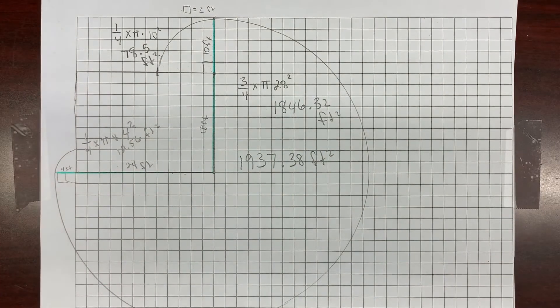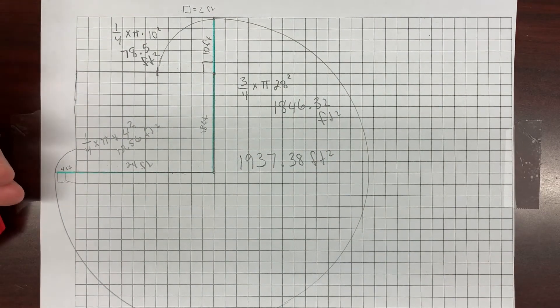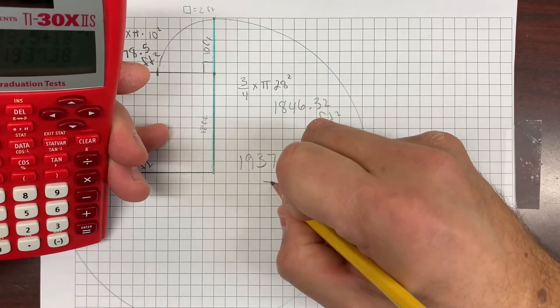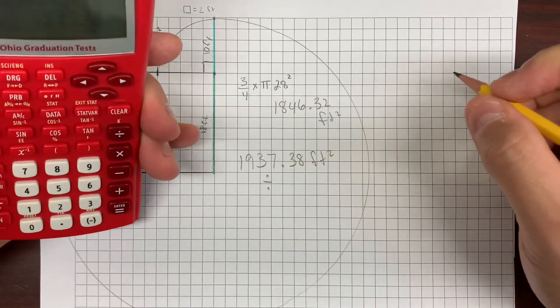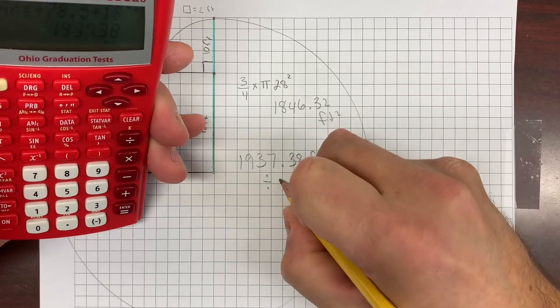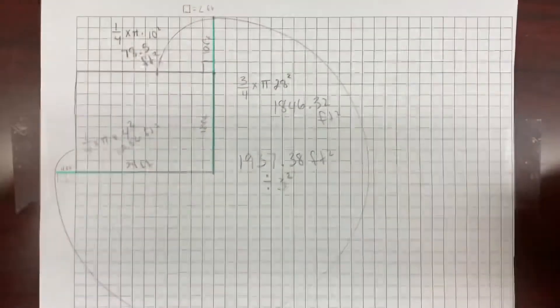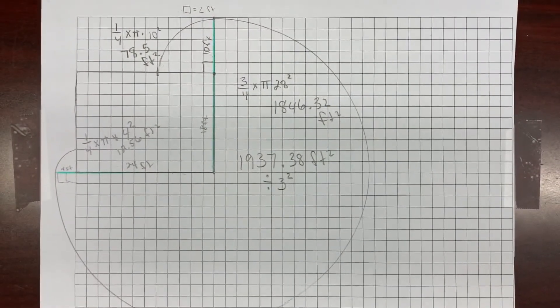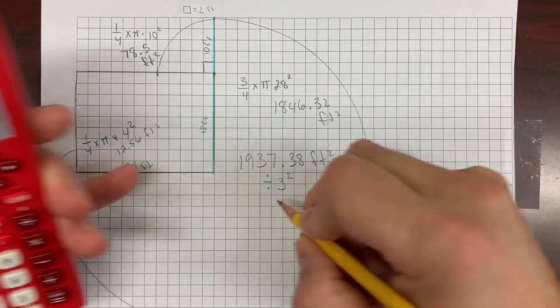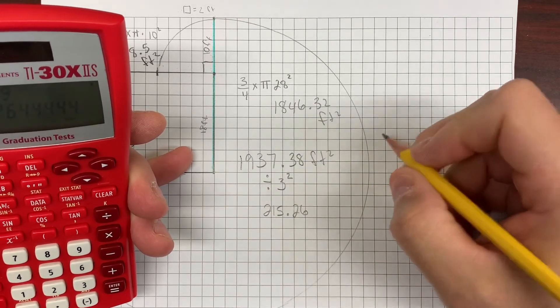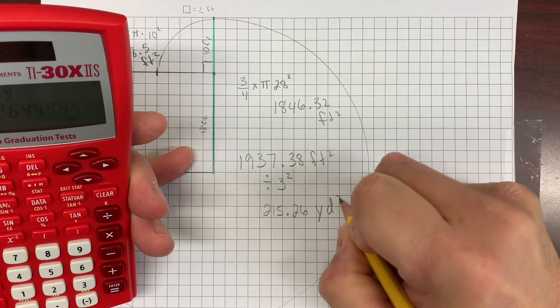And it did ask for yards squared, I believe. So yes, how many square yards is Gracie able to graze? So to convert this to yards, we're going to divide this by the number of square feet in a square yard, which is, well, there's three feet in a yard, so that's three squared. So let's go ahead and divide this by nine, essentially. And that's going to give us 215.26 yards squared.